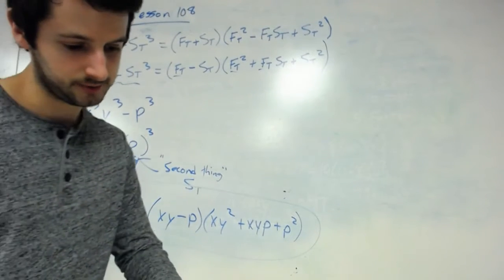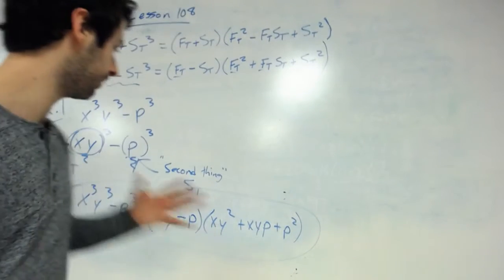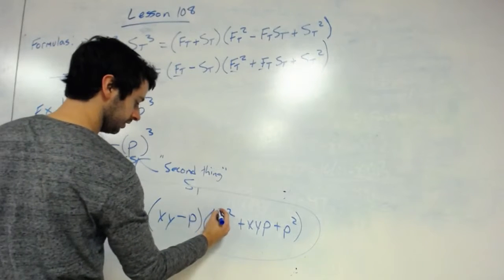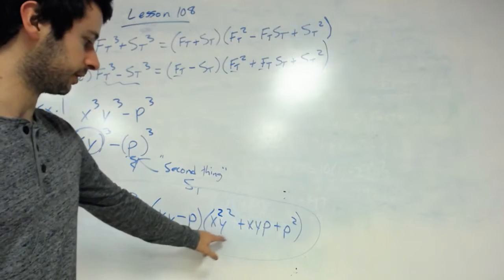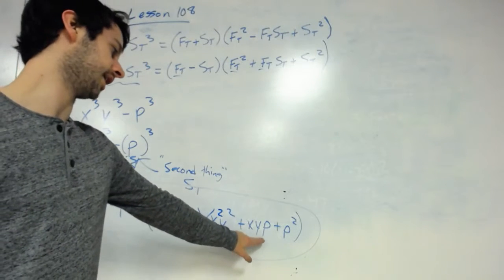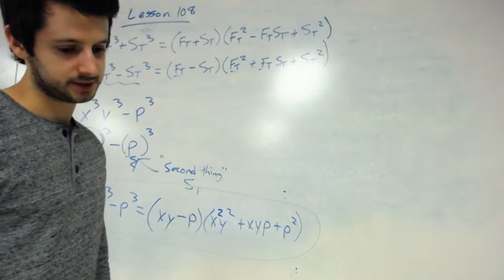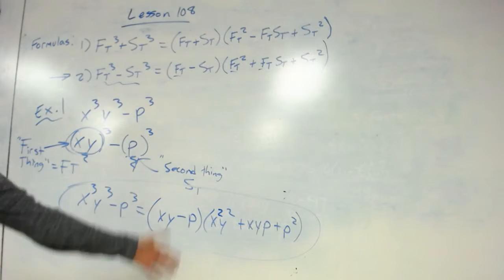Let me make sure I have my right answer. xy minus p times x squared. Oh, my bad. I did forget to. This squared means I'm squaring both of them. I did forget to do that. That's my bad. So x squared, y squared, plus xy times p, plus p squared. And that would be my answer. That is x cubed, y cubed, minus p cubed, factored out.